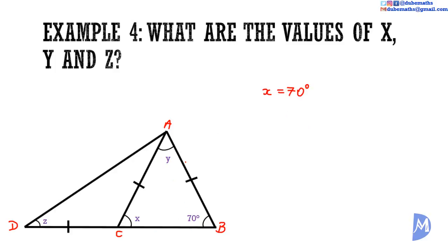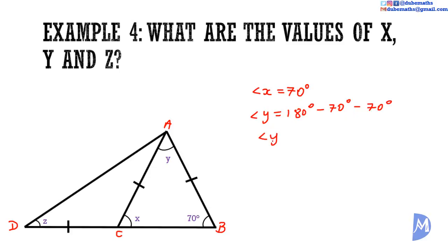Angle Y: the three angles in a triangle add up to 180 degrees. Thus, 70 degrees plus X plus Y equals 180 degrees. We know the value of X is 70 degrees, so Y is equal to 180 minus 70 minus 70. Angle Y is equal to 40 degrees.